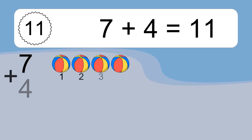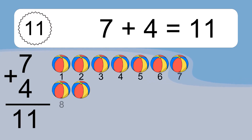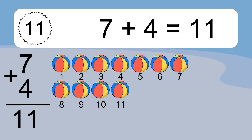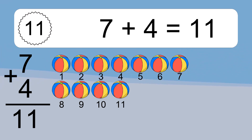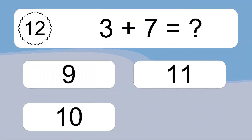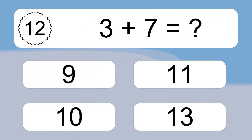7 plus 4 equals what? 7 plus 4 equals 11. Let's count it. 1, 2, 3, 4, 5, 6, 7, 8, 9, 10, 11.